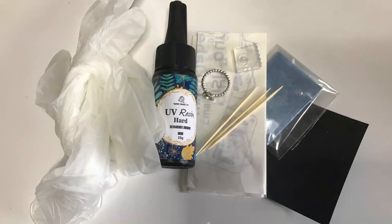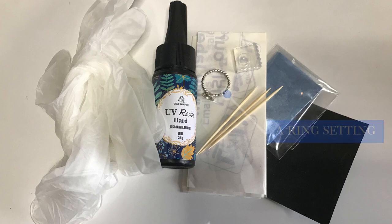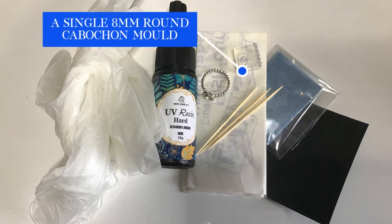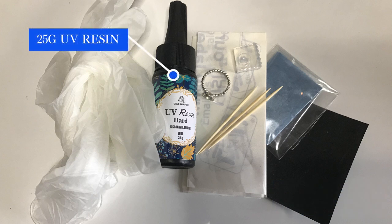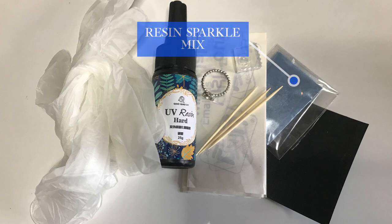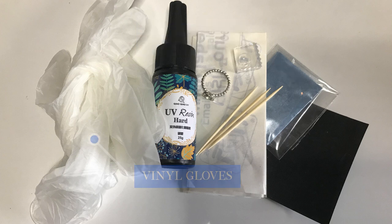You'll need the following supplies: one of our hair ring kits in your client's size. The hair kits contain a ring setting, a single 8mm round cabochon mold, label backing paper, 25g of UV resin, 3 cocktail sticks, a random sample of resin sparkle mix, vinyl gloves, and some sandpaper.